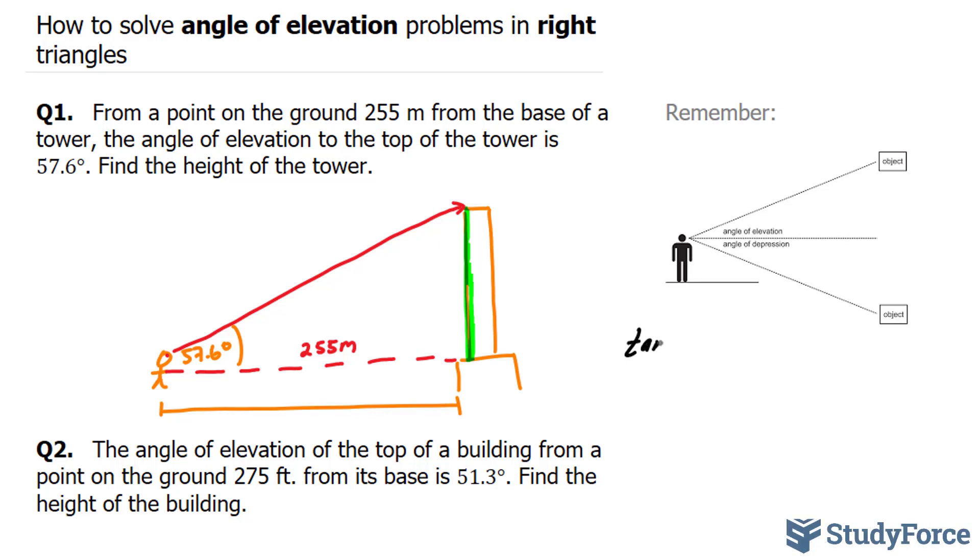We have tangent theta equals opposite over adjacent. Our opposite is what we're looking for, I'm going to denote that with an x. My adjacent is 255 meters. My angle is 57.6 degrees.